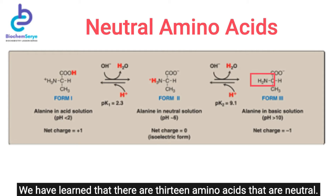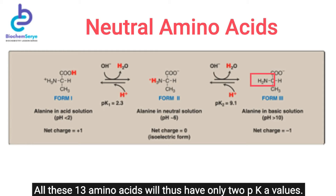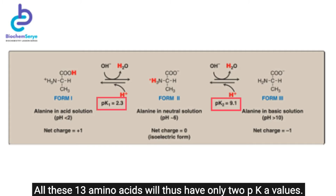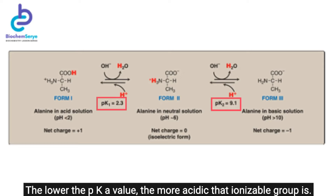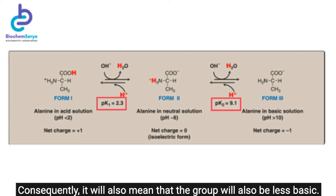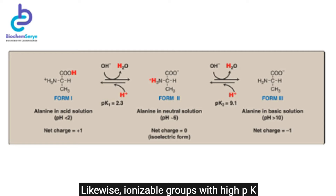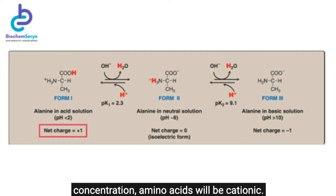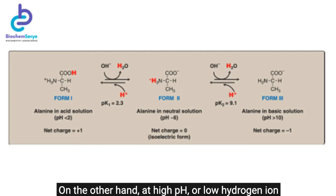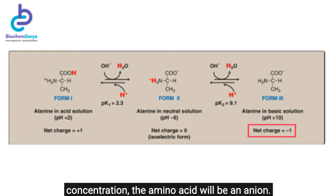There are 13 amino acids that are neutral, and all will have only two pKa values. The lower the pKa value, the more acidic and less basic that ionizable group is. Conversely, ionizable groups with high pKa values are more basic and less acidic. At low acidic pH or high hydrogen ion concentration, amino acids will be cationic. At high pH or low hydrogen ion concentration, the amino acid will be anionic.